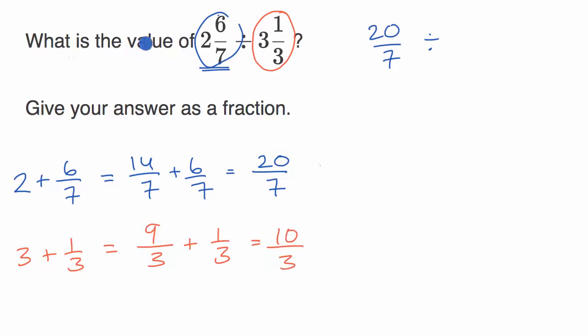So I've just rewritten this quotient, I guess you could say, as 20 over seven divided by 10 over three. And now we just have to remember how to divide fractions. If I divide by a fraction, that's the same thing as multiplying by its reciprocal.